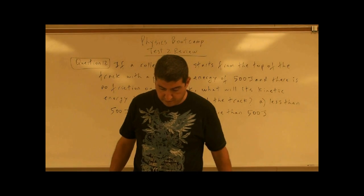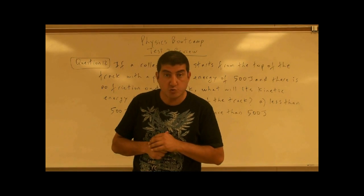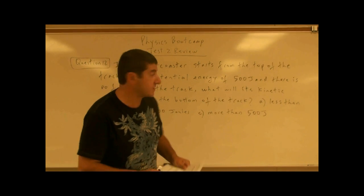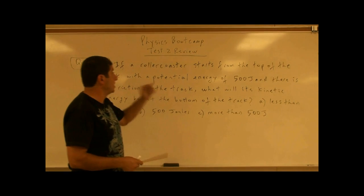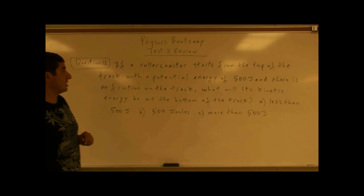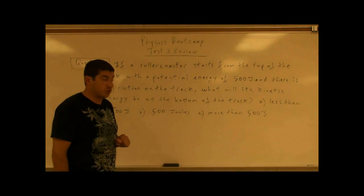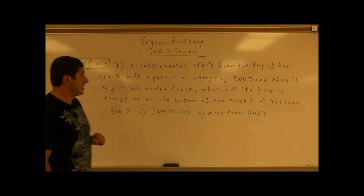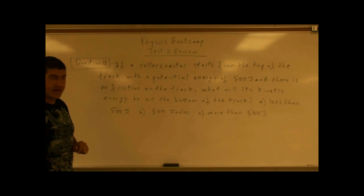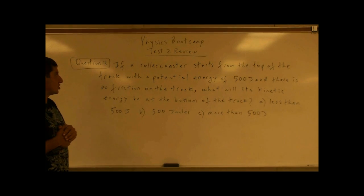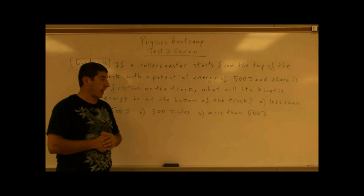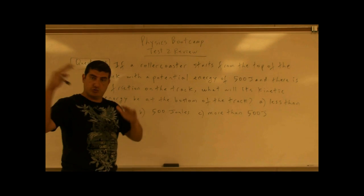Go to question 12. Question 12 says: if a roller coaster starts from the top of the track with a potential energy of 500 joules, and there is no friction on the track, what would its kinetic energy be at the bottom of the track?